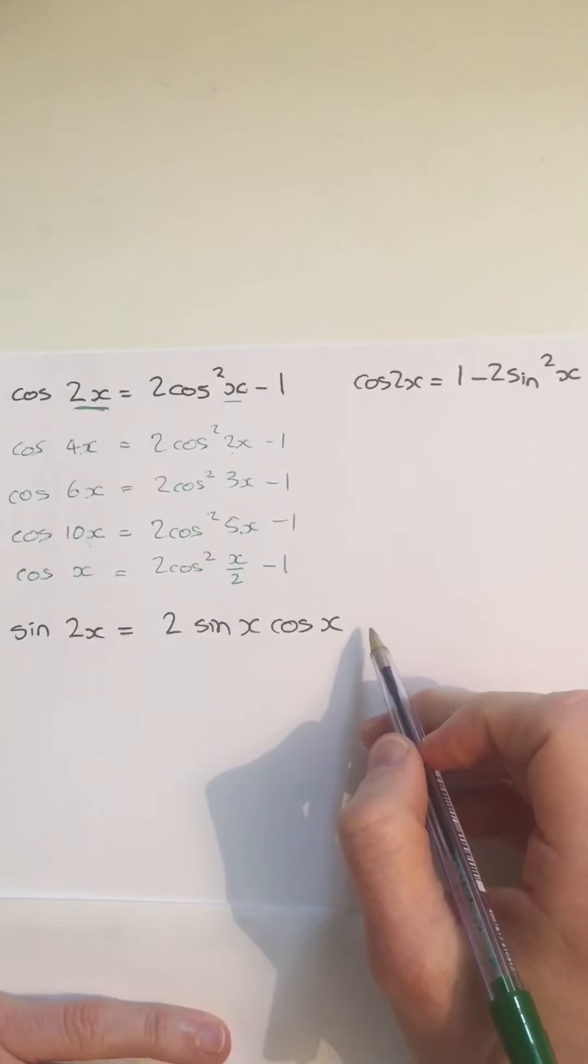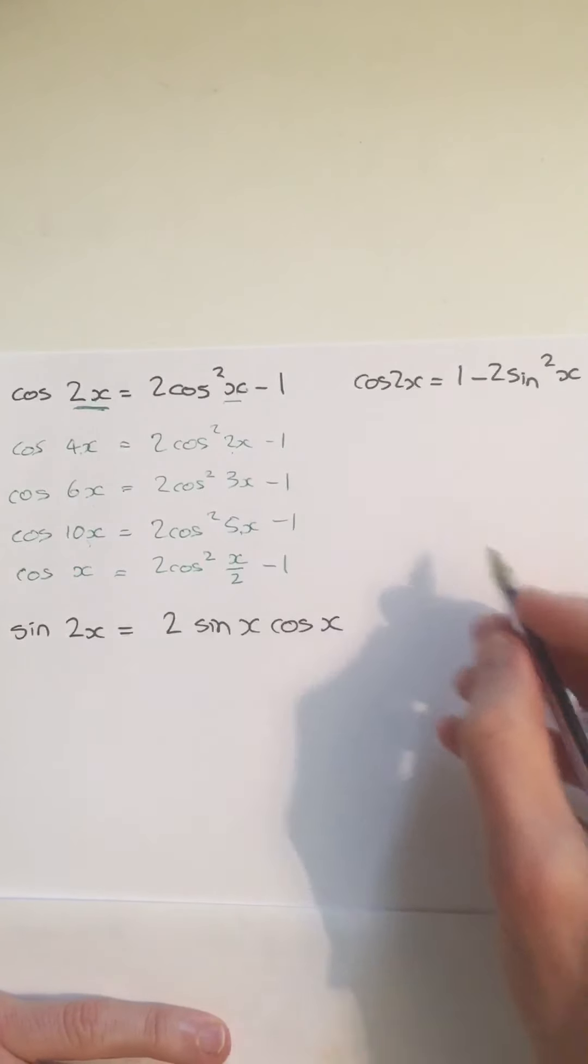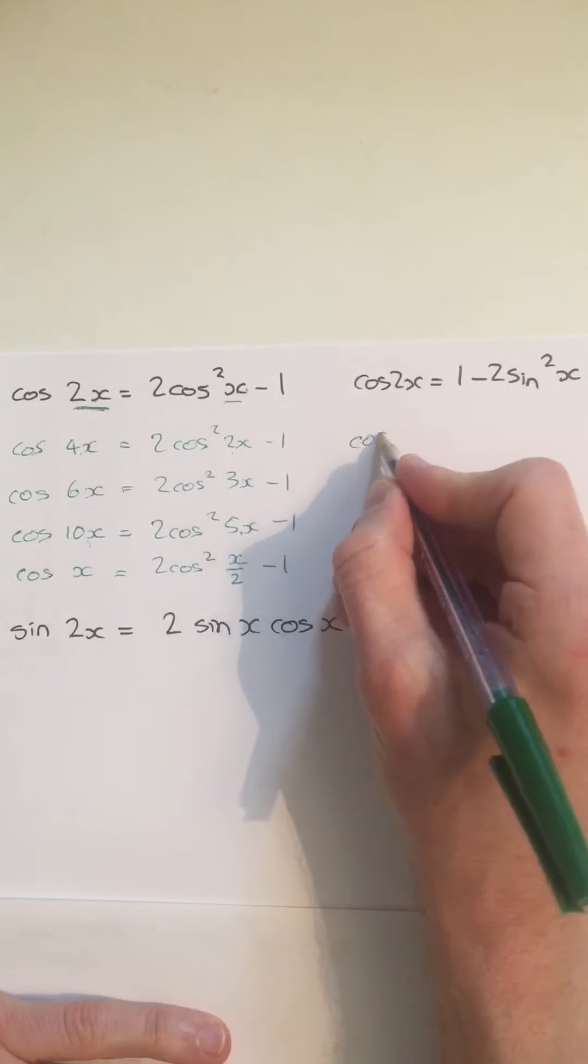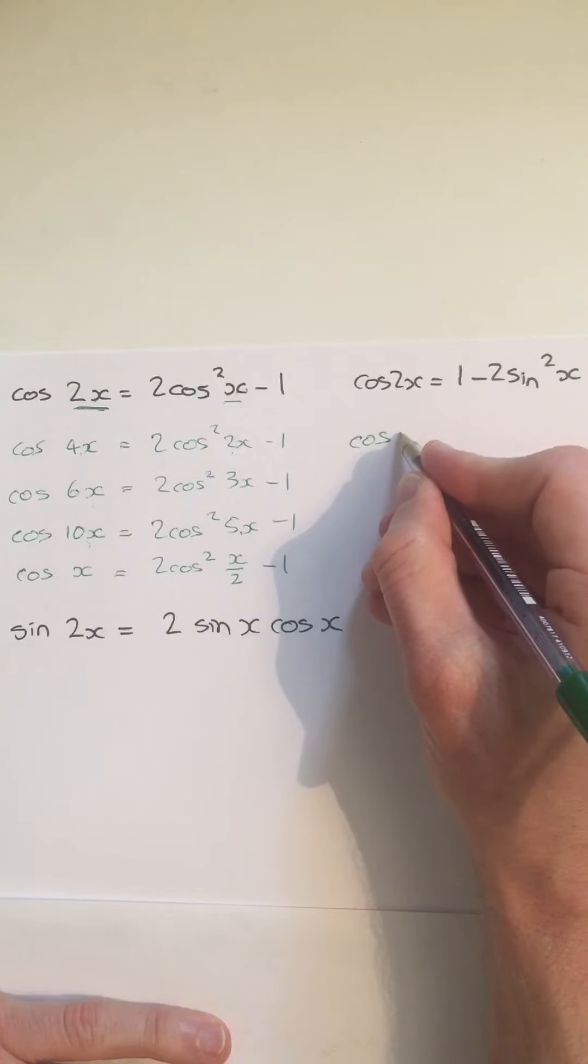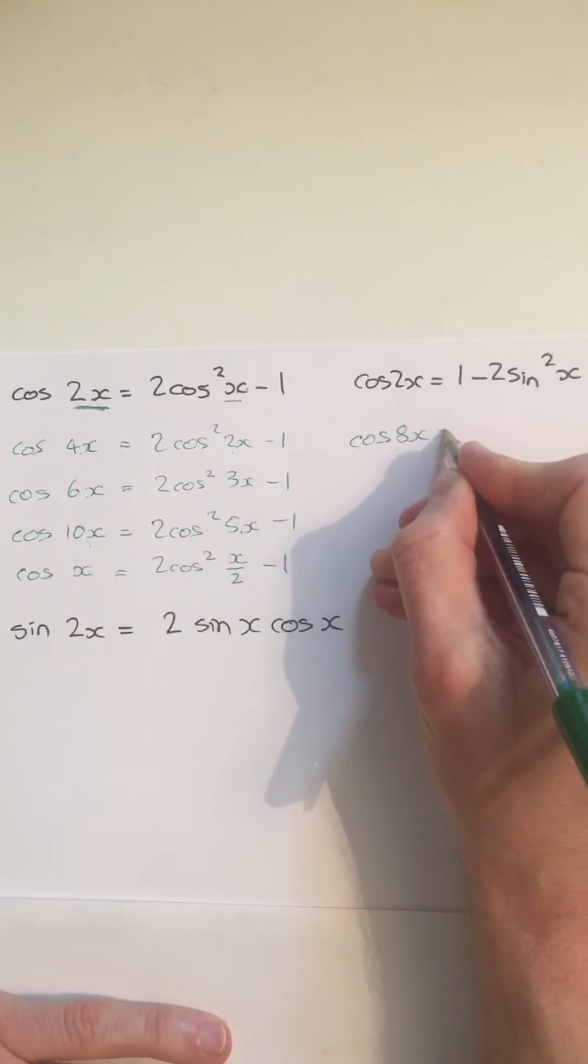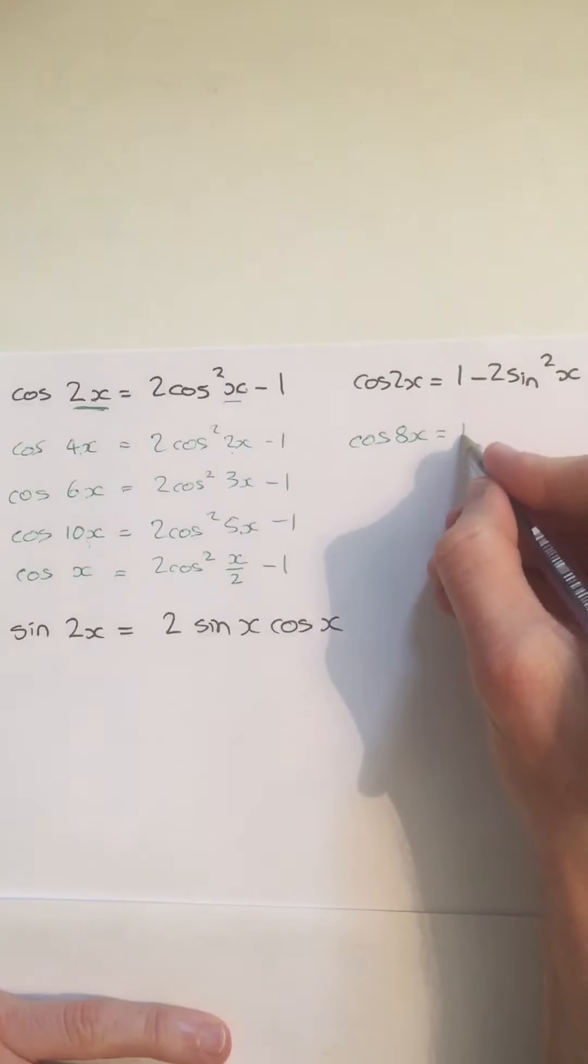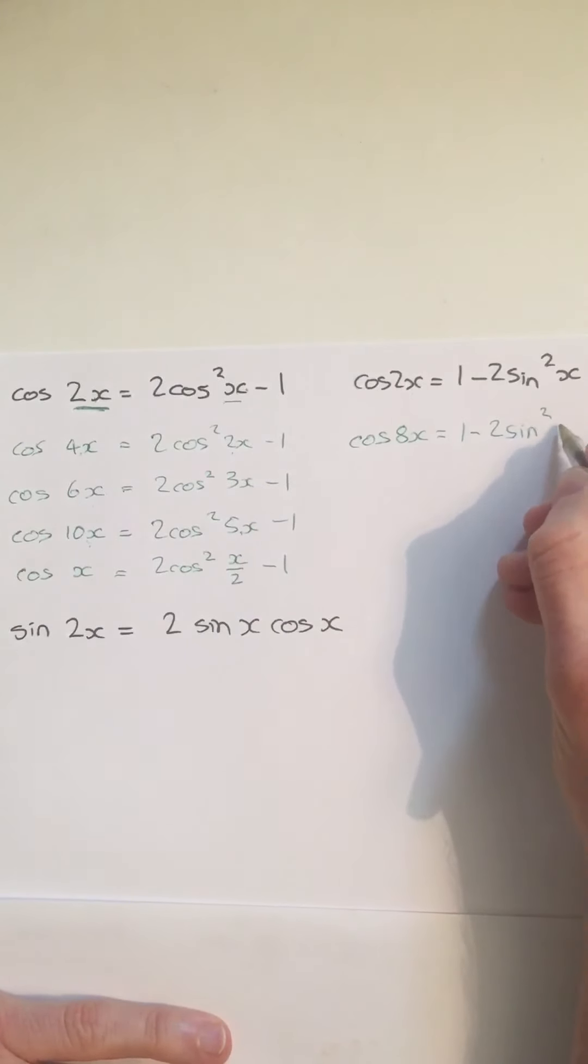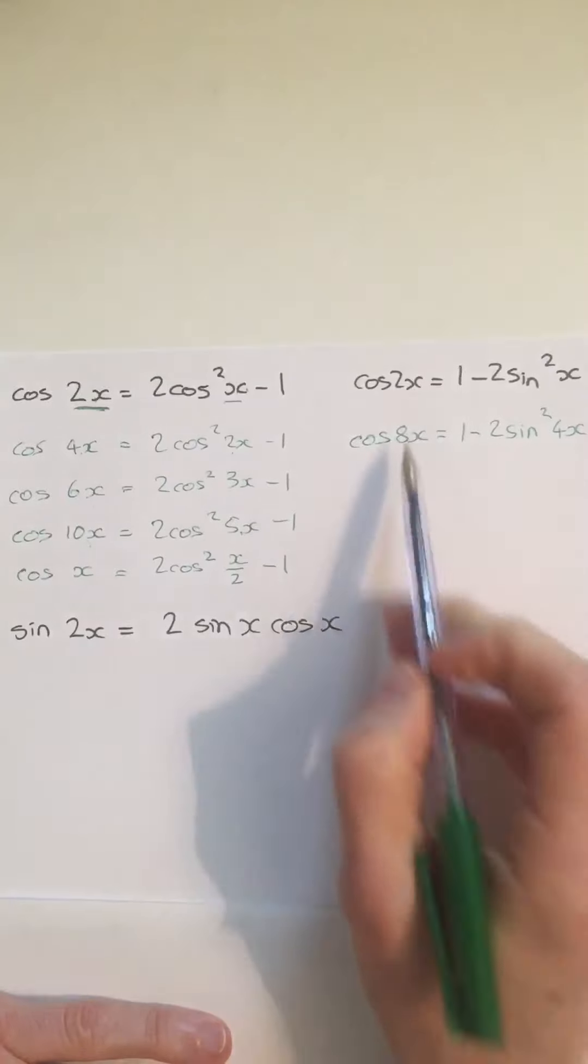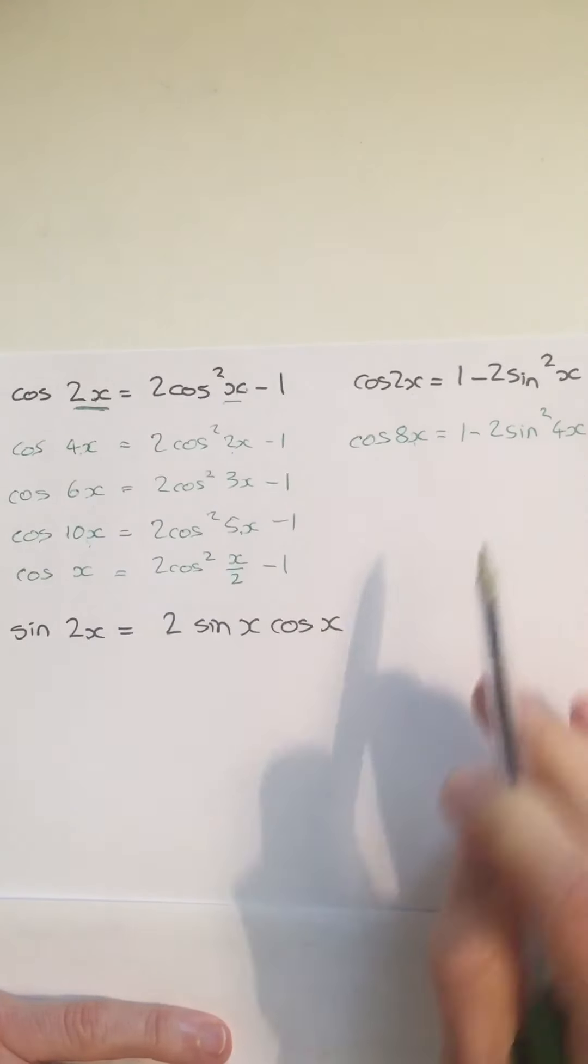Works for the sine version of the cos formula as well. So we could say that cos 8x, times this by 4, would be the same as 1 minus 2 sine squared 4x. Times this by 4, times this by 4.